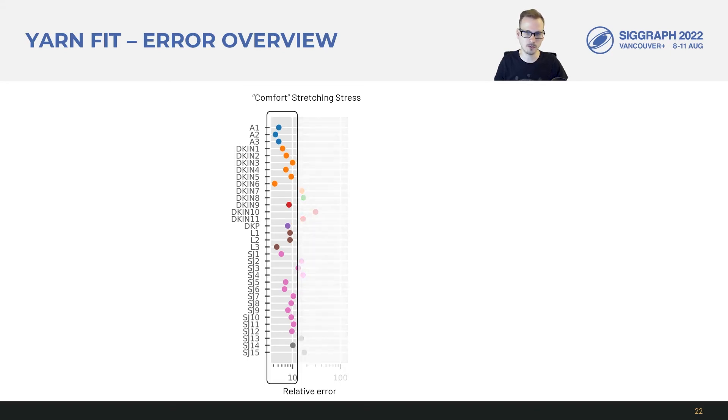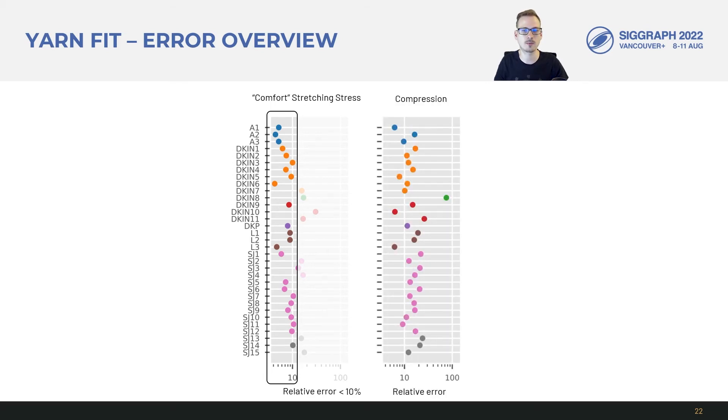We find that most of our fabrics actually have less than 10% error in the comfort range which given the difficulty of fitting yarn mechanics to real fabric was a positive surprise to us. I'll also show the error with respect to orthogonal compression and in this case we mostly stay within 20% error.